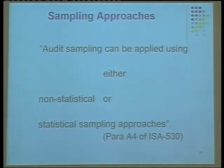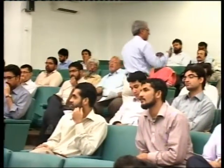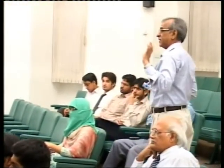Regarding sampling approaches — during the break, someone raised concerns about the complexity of statistical sampling, such as using random number formulas. However, as stated earlier, audit sampling itself is not compulsory. And even when we do decide to do audit sampling, statistical sampling is still not compulsory. As stated by ISA 530, you can do it statistically or non-statistically.